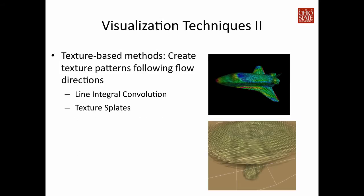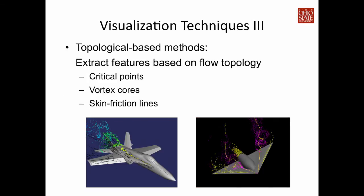The second category is to create textures over surface or three-dimensional volumetric space. Essentially, the textures are created in a way that the patterns follow flow directions. Well-known examples include the line integral convolution technique, or called LIC, and also texture splats. The third visualization techniques are more feature specific. One example is to extract flow features based on the topology or based on physically meaningful phenomena. Examples include critical points, that is where the vector velocity vanishes, vortex cores, that is the center of the rotation in the flow, or other more domain-specific features such as skin friction lines.